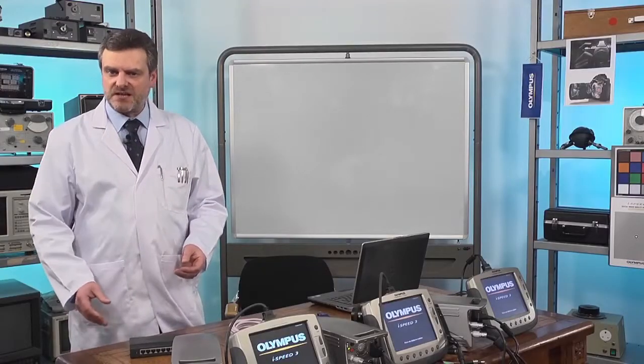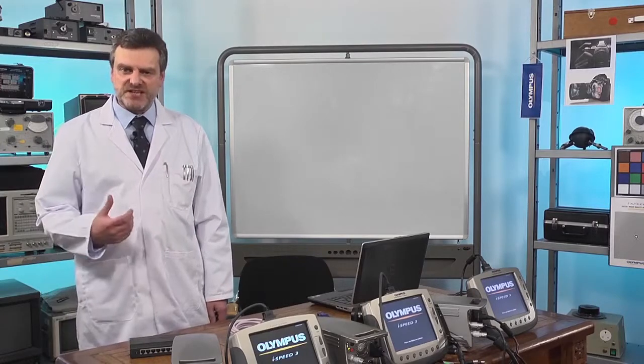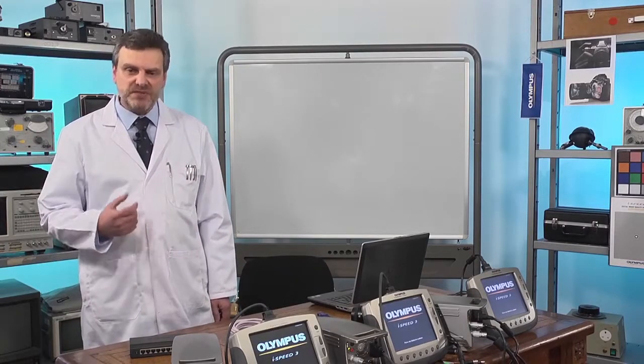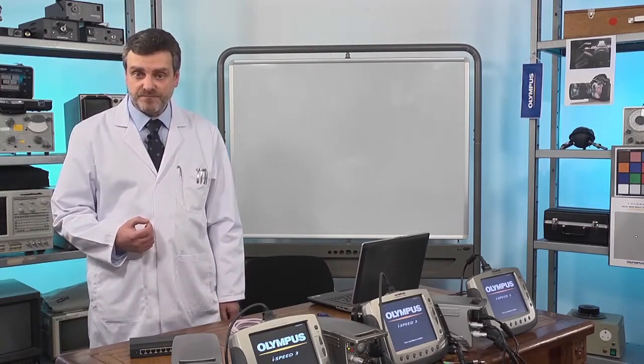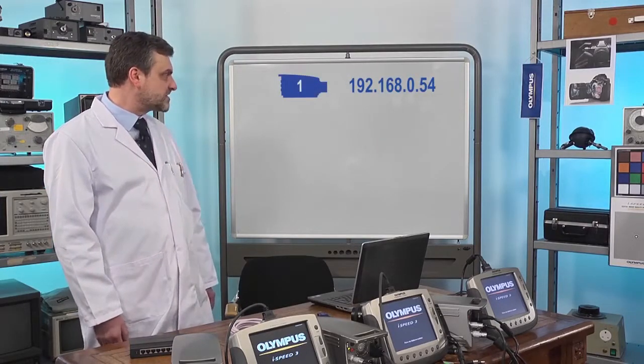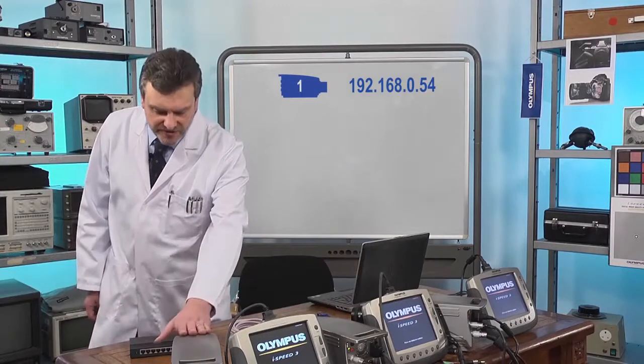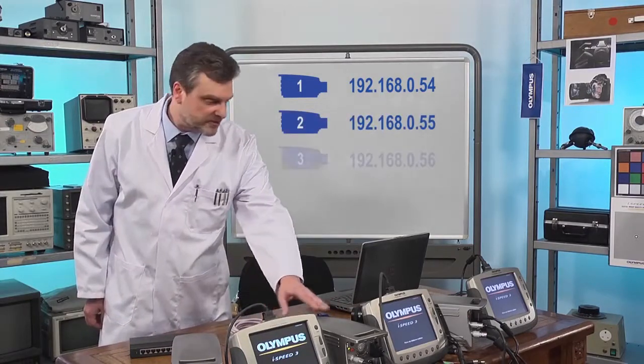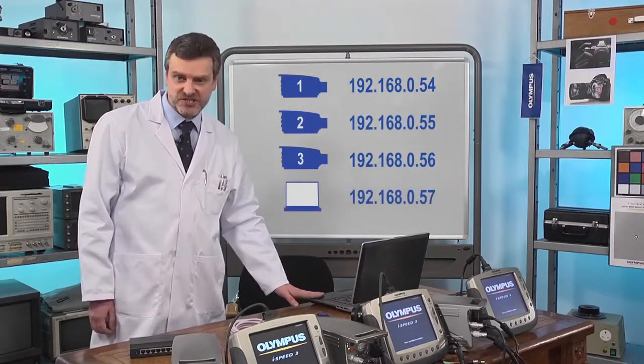I mentioned in the second iSpeed Labs that everything that's connected to an Ethernet network must have an IP address. I'm going to use the IP addresses 192.168.0.54, 55, 56, 57.